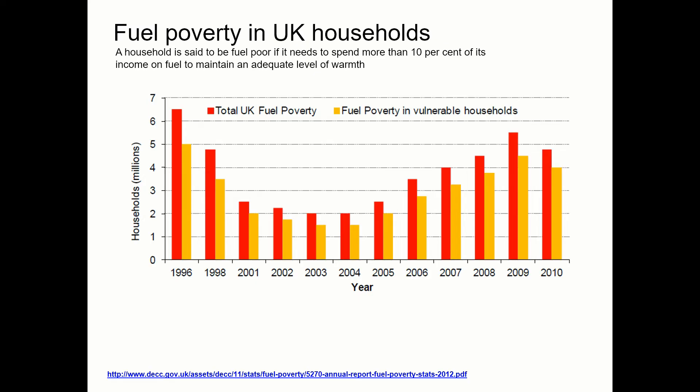Fuel poverty can be thought of as an overspend on fuel. The definition is: a household is said to be fuel poor if it needs to spend more than 10% of its income on fuel to maintain an adequate level of warmth. That 10% is of the entire household income, and the word 'adequate' means not a swelteringly hot house, but heated to the point where we can mitigate against damp and cold and keep an environment conducive for family life.